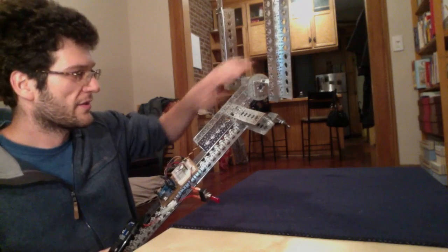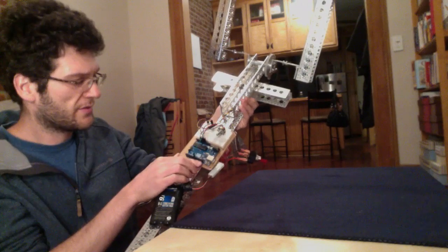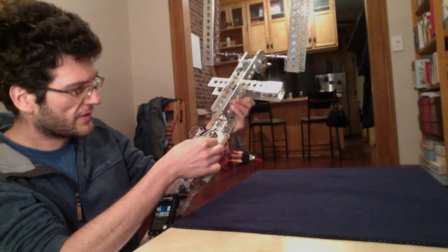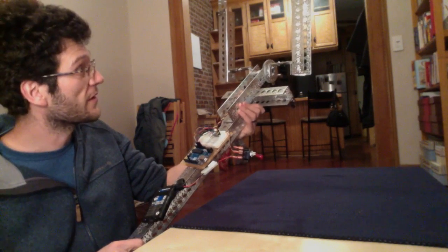And that is the only motor in the whole design. That servo is being driven by this Arduino down here. This Arduino is reading voltage off this pot which is the adjustment for the speed that it will move the arms.